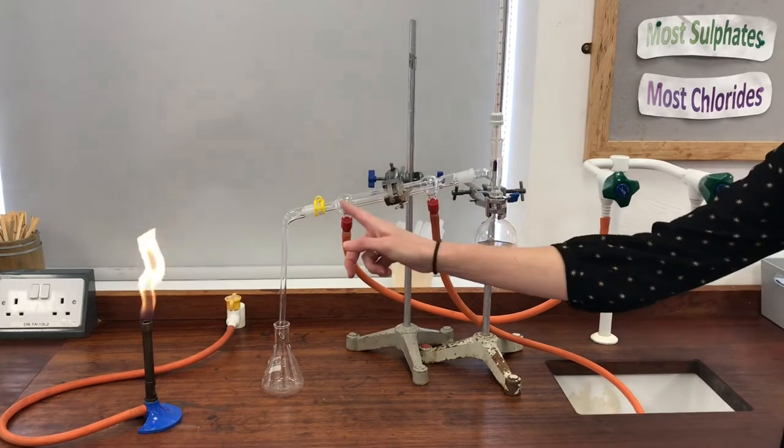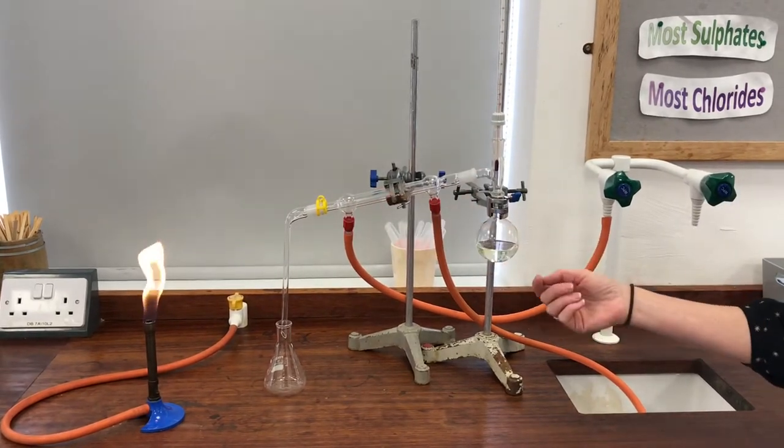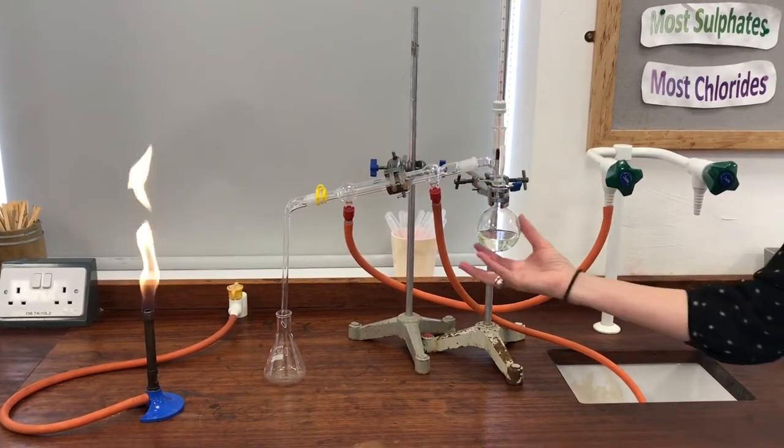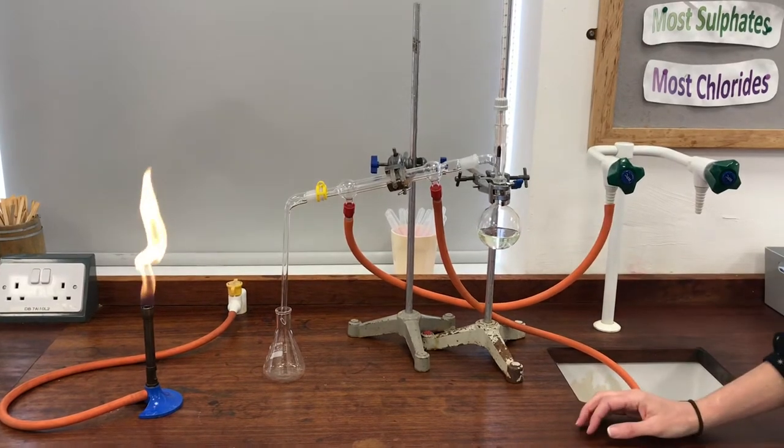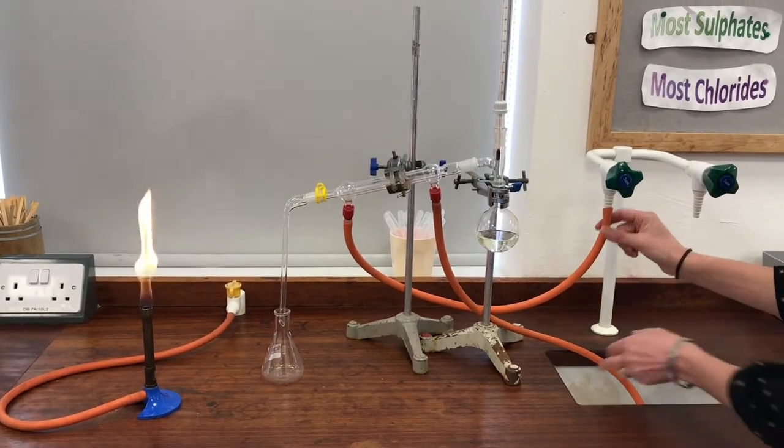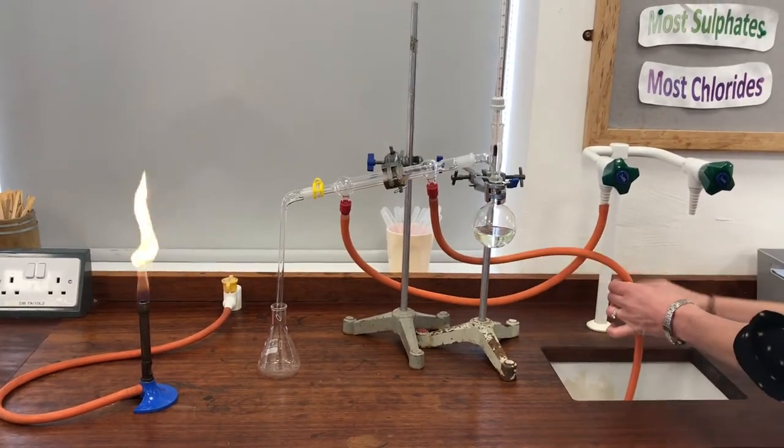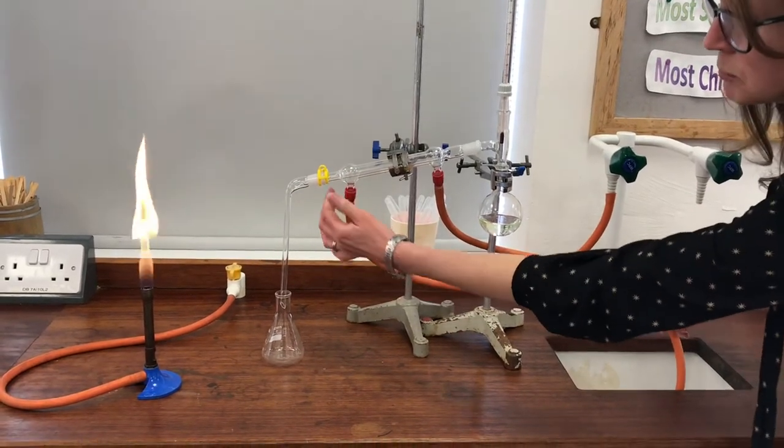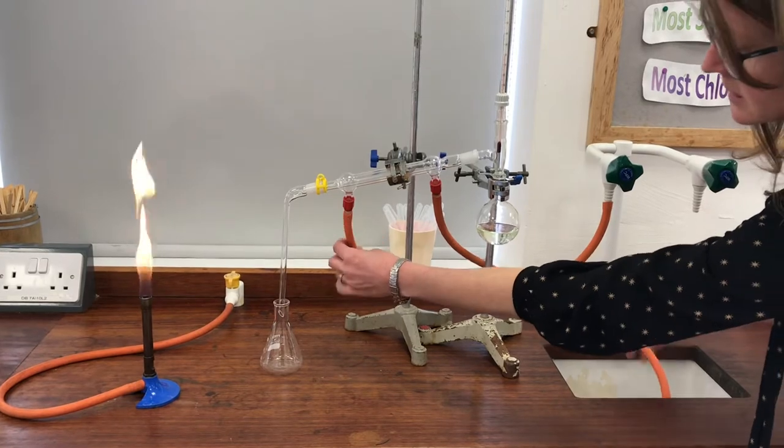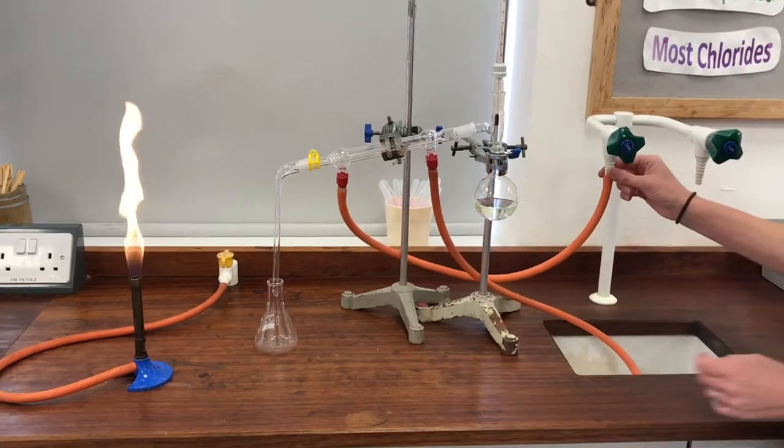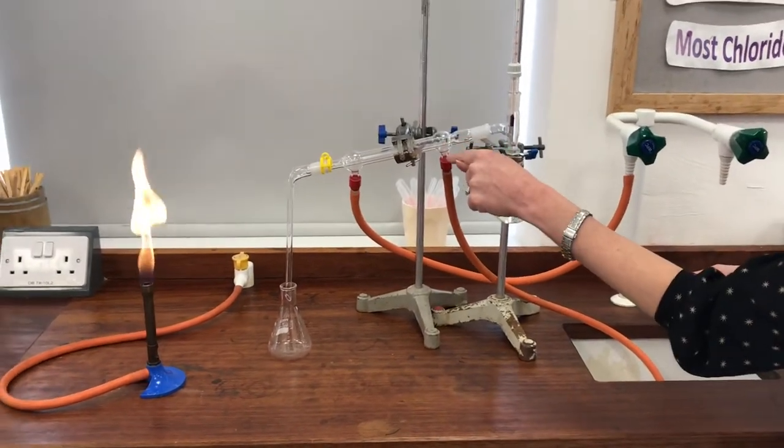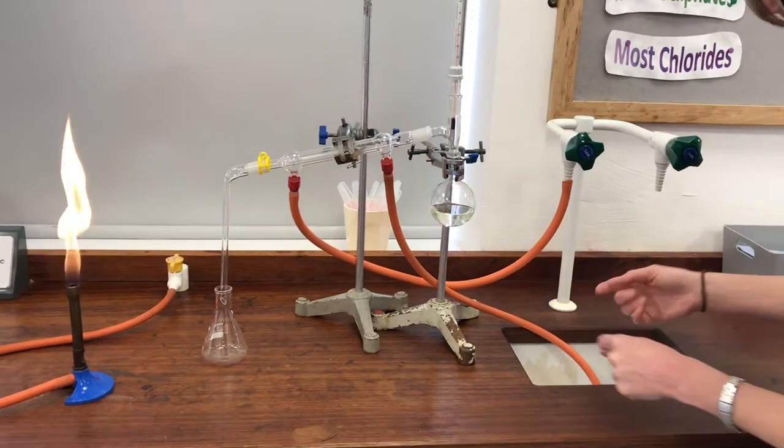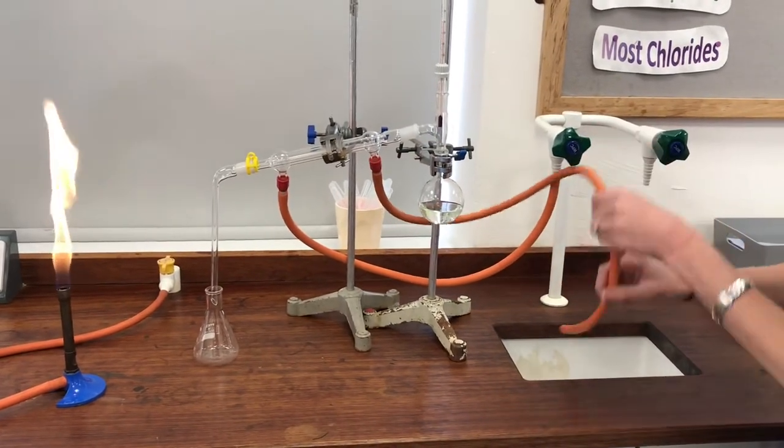Now you can see I've got the condenser here set up in the correct orientation so it's attached to all this system of glassware and I've got these hoses attached to it as well, and I have to be really careful about which way round I attach them. The water always goes in at the bottom of the condenser here, so you can see this hose is attached to the tap, and the water comes out at the top of the condenser here, and this hose is empty and that's just going to point down the plug hole.